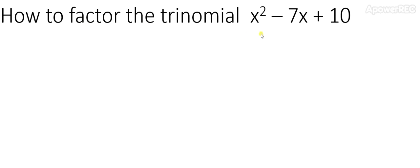How to factor the trinomial x squared minus 7x plus 10? We're going to use the binomial pair of x minus m times x minus n.